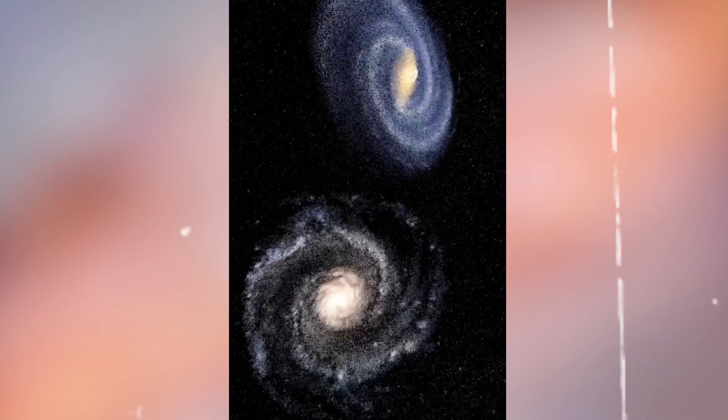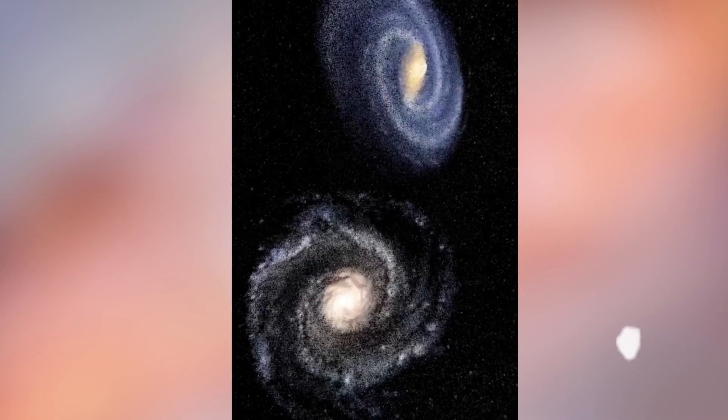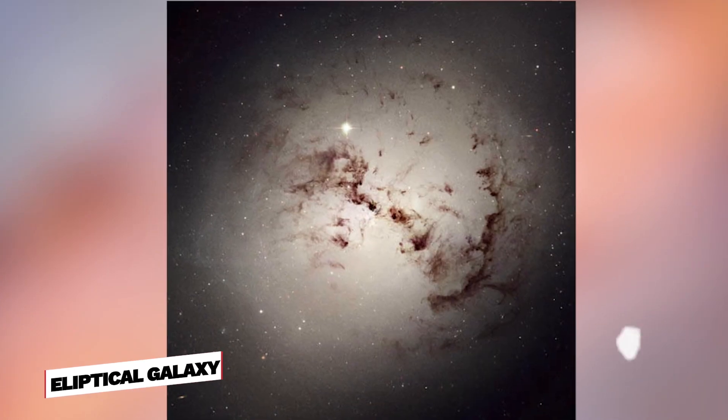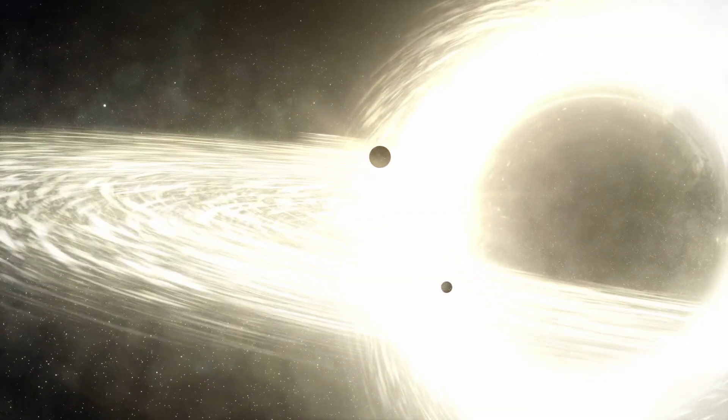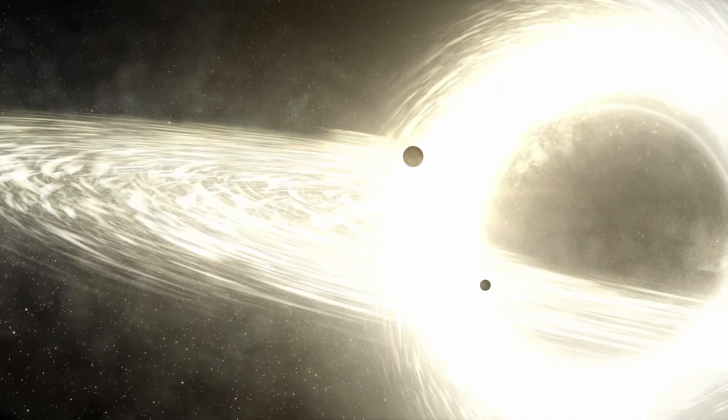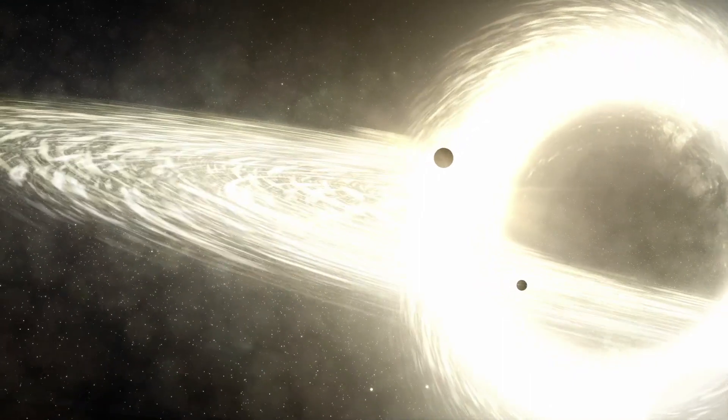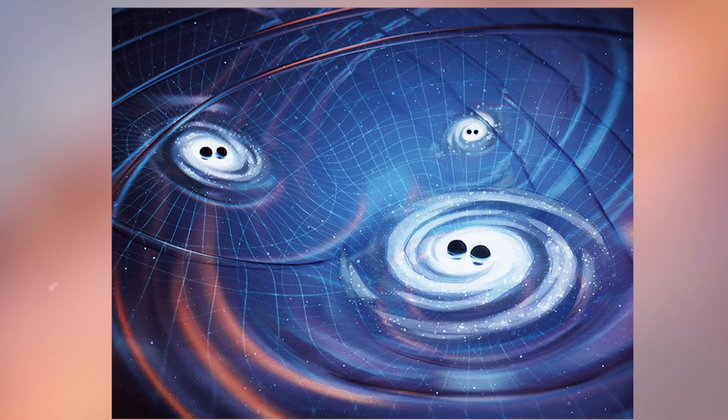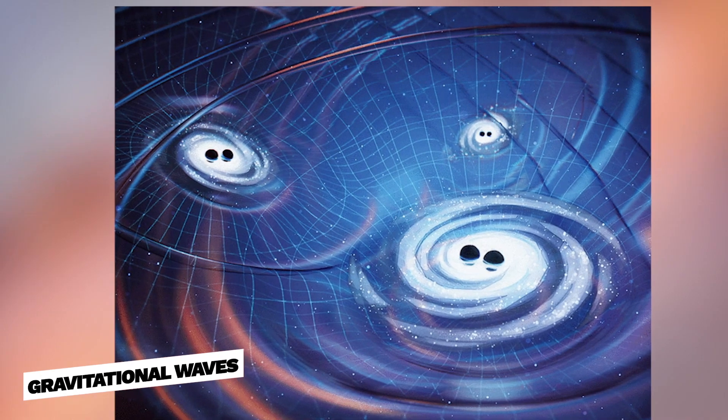The interaction between the Andromeda and Milky Way galaxies will create a new elliptical galaxy. During this process, supermassive black holes at the centers of both galaxies will merge, releasing a tremendous amount of energy in the form of gravitational waves.